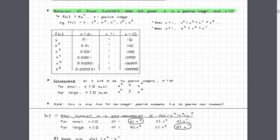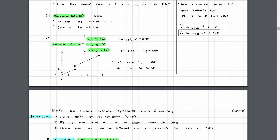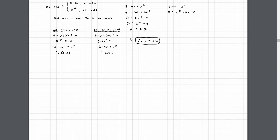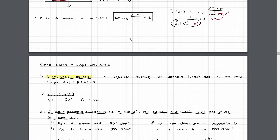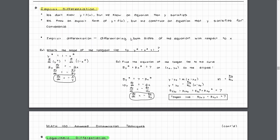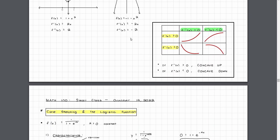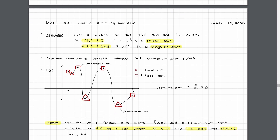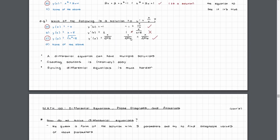MATH 100 is all about differential calculus, which as a great oversimplification concerns the rate of change of something. It starts off with pre-calculus concepts like functions and asymptotes, which gradually transitions into limits and derivatives. With that base knowledge you'll then learn different differentiation techniques, optimization problems, some differential equations, and methods of approximating the slope of a tangent line. MATH 100 closes off with an introduction to multi-variable functions and partial derivatives.